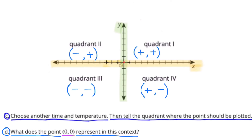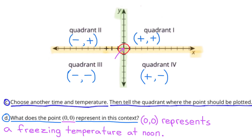D. What does the point (0, 0) represent in this context? The first 0 represents noon, and the second 0 represents freezing. So (0, 0) represents a freezing temperature at noon.